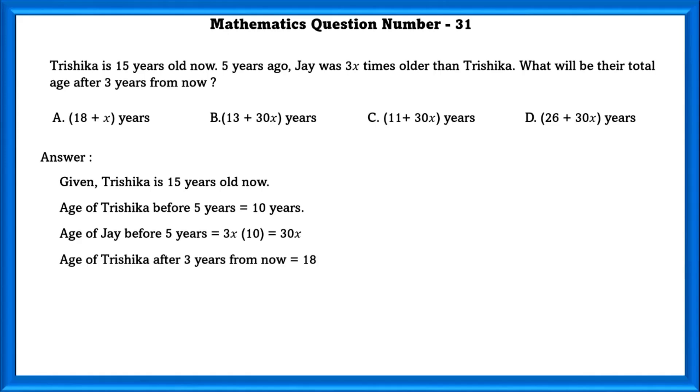Age of Trishika after 3 years from now is equal to 18. Age of Jay after 3 years from now is equal to 30x plus 5 plus 3 which is equal to 30x plus 8. So their total age is equal to 18 plus 30x plus 8 which is equal to 26 plus 30x.